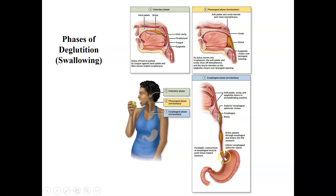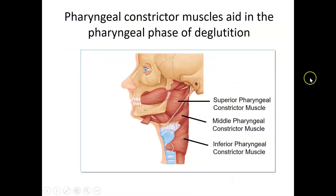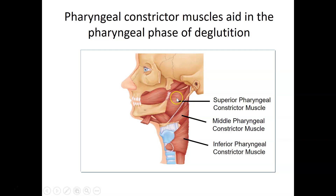Peristaltic contractions push the bolus down through the esophagus, and then it reaches another sphincter called the gastroesophageal sphincter controlling entry into the stomach. The pharyngeal constrictor muscles are three skeletal muscles arranged in superior, middle, and inferior positions, surrounding the oro- and laryngopharynx. They contract in order — one, two, three — driving motility of the food downward toward the esophagus.